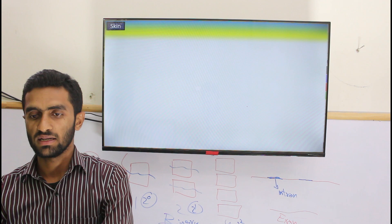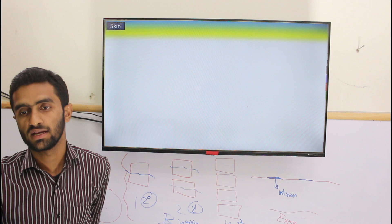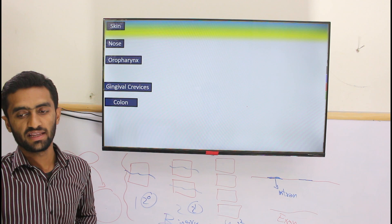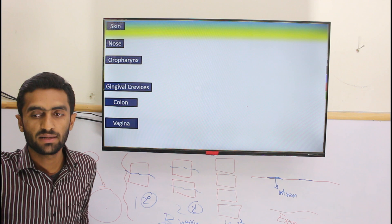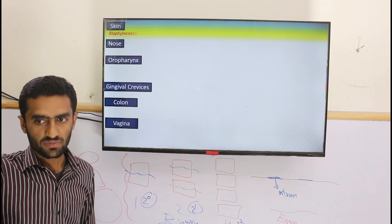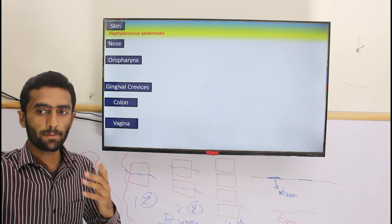Here is a list of normal flora you need to know, as they come up repeatedly. They are present in the skin, nose, oropharynx, gingival crevice, colon, and vagina — these five to six locations are very important. The most important organism for the skin is Staphylococcus epidermidis, which is related to the dermis.